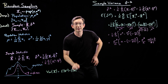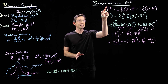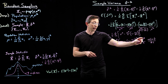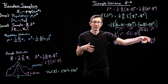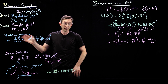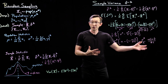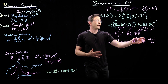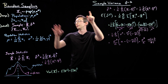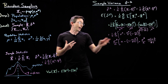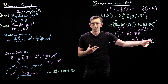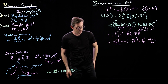So the expected value of the sample variance sigma hat squared is related to the true population variance sigma squared times some factor that depends on the sizes of the population and sample. This is really interesting — it means I could build an unbiased estimator of my population variance by taking my sample variance and multiplying it by the inverse correction factor.